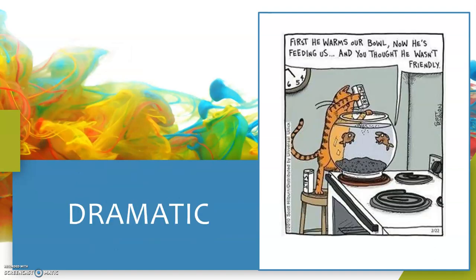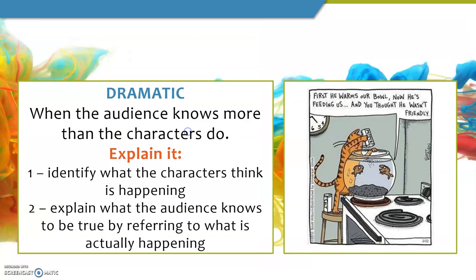The final type is dramatic irony. Those studying drama may already be familiar with this device. In the example, two little fish are in a bowl sitting on a stove; a cat is holding a canister of pepper with salt beside his foot, and the fish says 'first he warms our bowl, now he's feeding us — and you thought he wasn't friendly.' Dramatic irony is when the audience is aware of something that the characters are unaware of — the audience knows more than the characters do. You've probably experienced this watching TV or theater, feeling frustrated because the character is oblivious and you want to shout 'no, don't run up the stairs, go out the front door!'